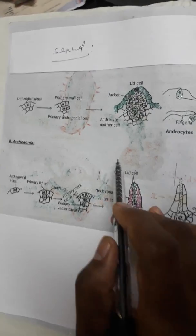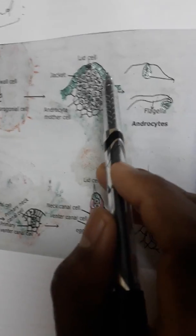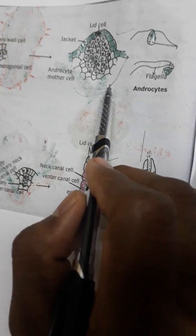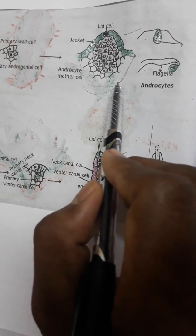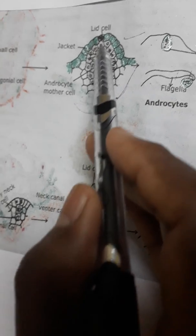Now, sexual reproduction. In sexual reproduction, two sex organs are involved. One is antheridium, another one is archegonium. Antheridium and archegonium both are embedded in tissue. There is no stalk, there is no clear venter. These antheridium and archegonium both are embedded in gametophyte tissue.